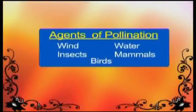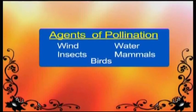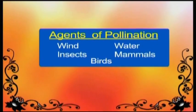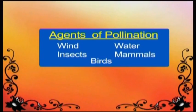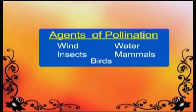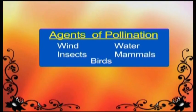Agents of Pollination. The most common agents of pollination are wind, water, insects, mammals and birds.